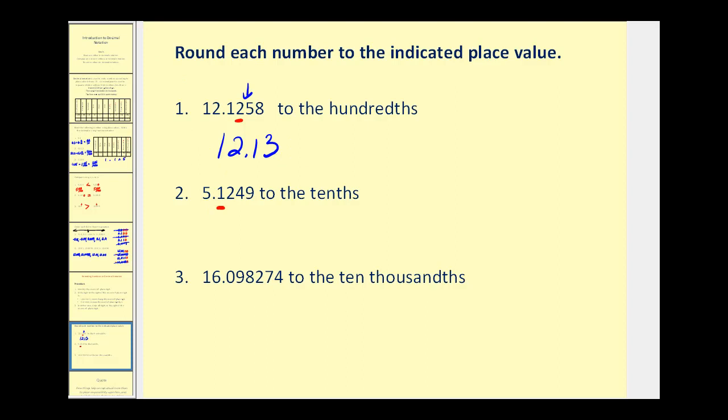On number two, the one is the tenths, and the two is the decision maker. The two tells us to round down, so we'd leave it as a one. We'd have five point one, or five and one tenth.